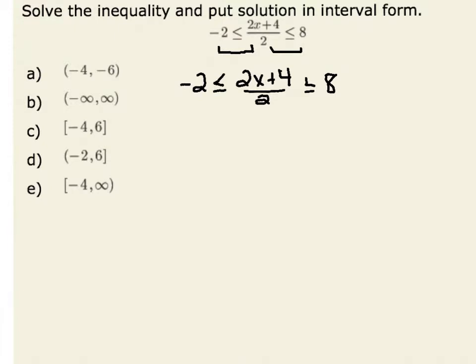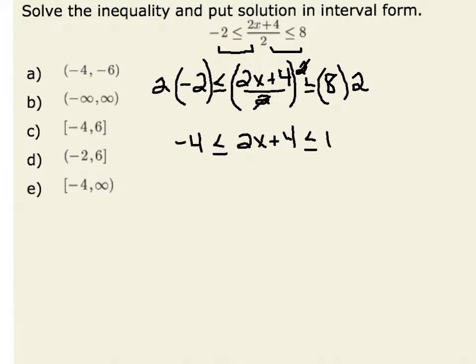When I look at 2x plus 4 divided by 2, one thing to do is multiply by 2. I would multiply both sides by 2. Therefore, I have 2 times negative 2, which is negative 4, less than or equal to 2x plus 4 divided by 2 times 2. The 2 divided by 2 cancels to make 1, so I'm left with 2x plus 4, and that's less than or equal to 8 times 2, which is 16.